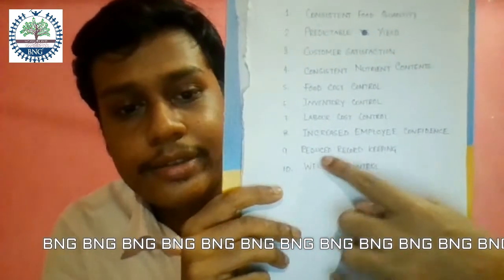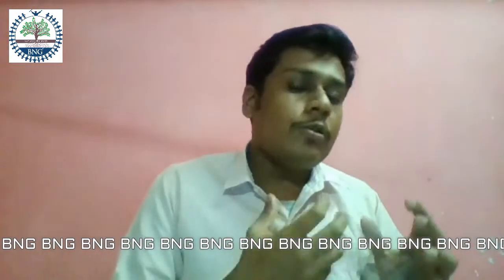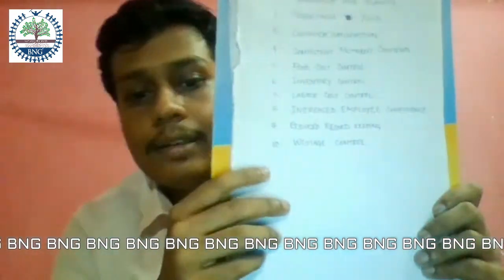Next is reduced record keeping. When everything is fixed and you know the actual size of the ingredients and what is required for a particular dish, you don't need extra things. This makes it very easy to keep records of ingredients and equipment.